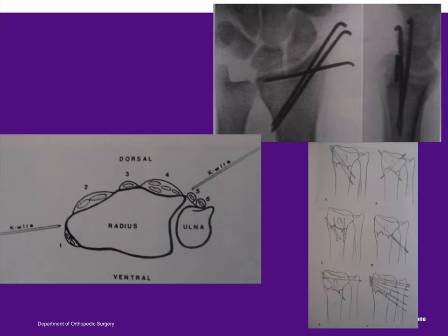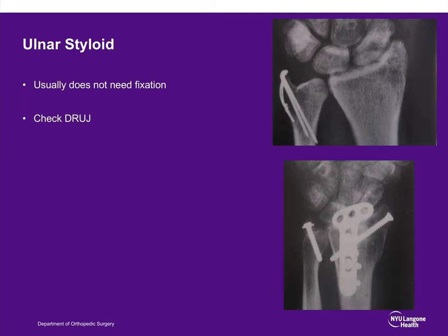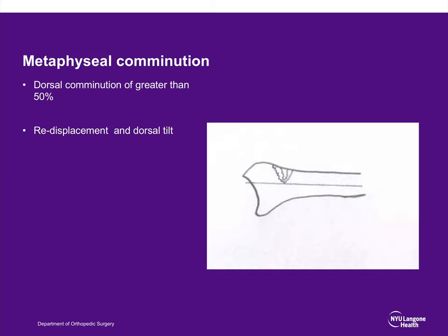The ulnar styloid is very commonly fractured in distal radius fractures, and multiple studies have shown it is unnecessary to fix every ulnar styloid fracture. However, if you have an unstable distal radioulnar joint, you may consider fixing it. For board purposes, the answer is to leave the ulnar styloid alone.